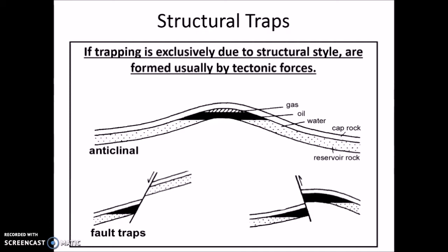You can see here the anti-clinal — it is where rocks that are folded and bent upwards. The hydrocarbons normally will migrate up to the flank of the anti-clines and will be trapped in the crest.